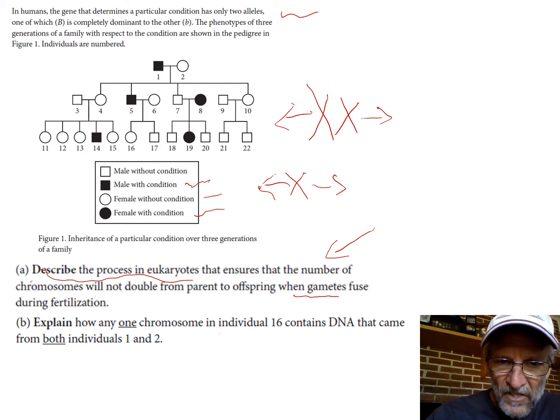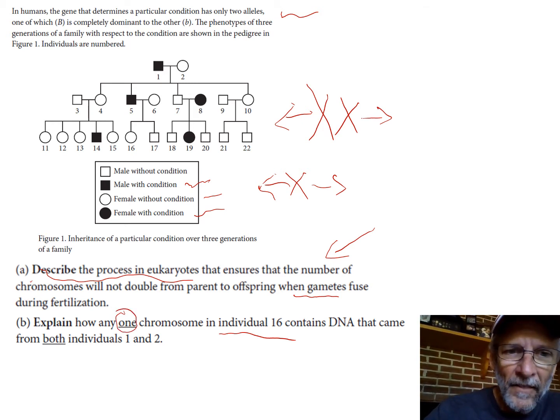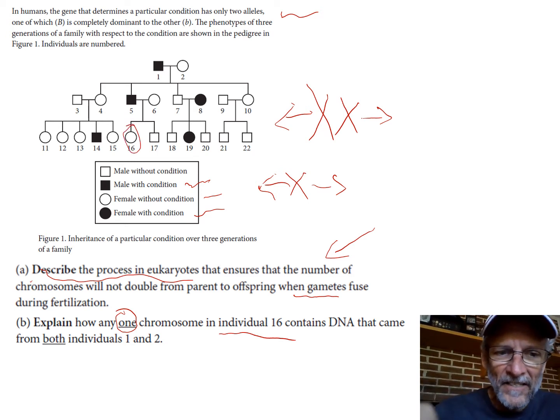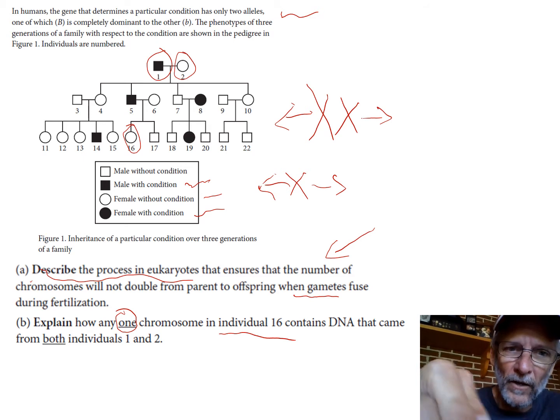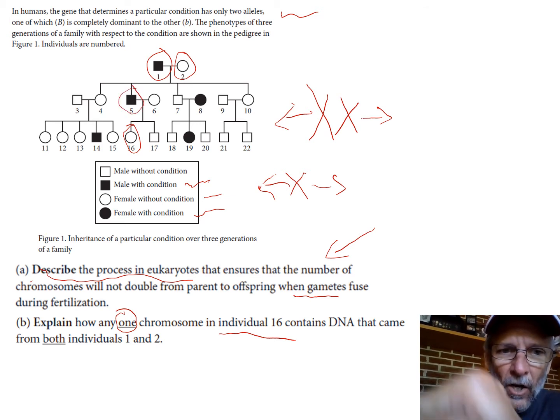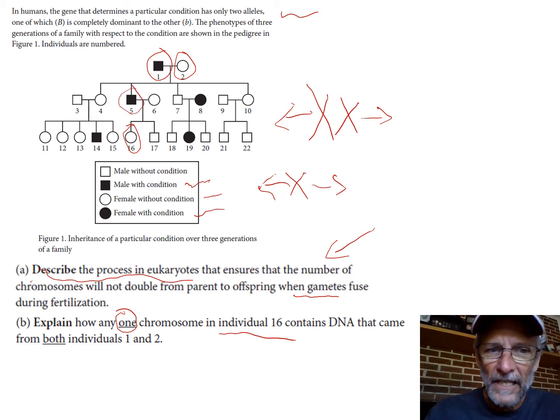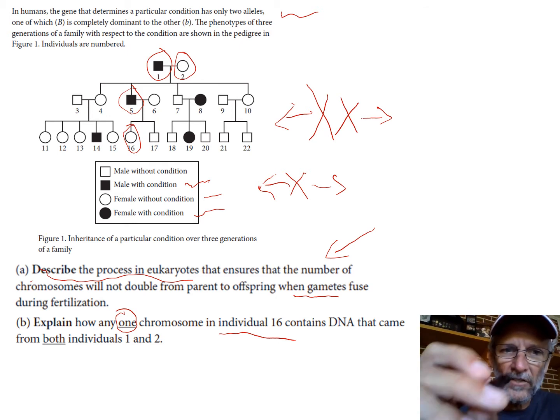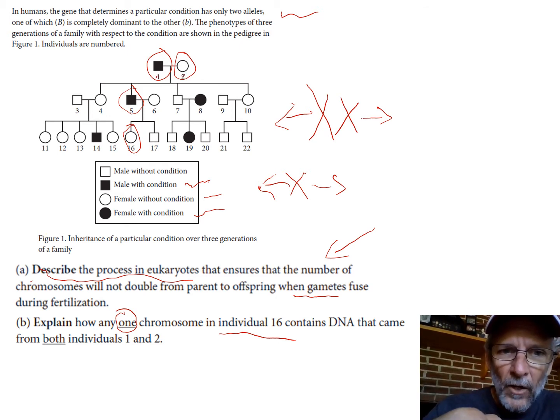Now they ask you about specific individuals. Explain how any one chromosome, underlined not the whole bunch of chromosomes but one chromosome, in this lady right here contains DNA that came from her grandparents. One and two are her grandparents. How did she get stuff from her grandparents? Well her grandparents had her dad, so these are the individuals involved.